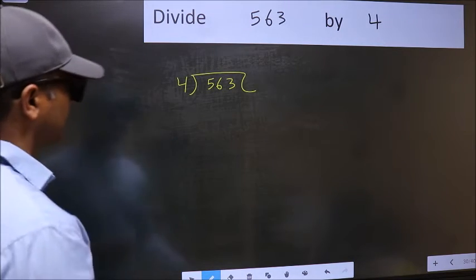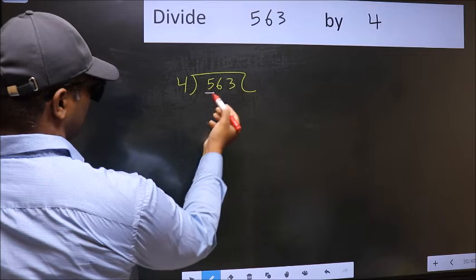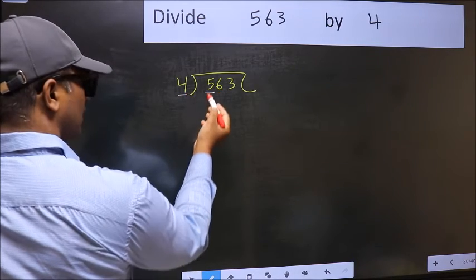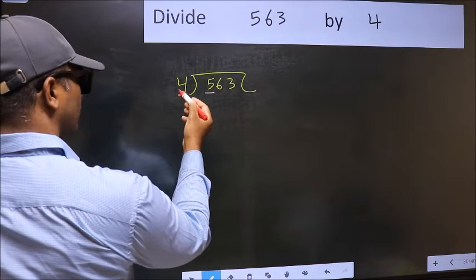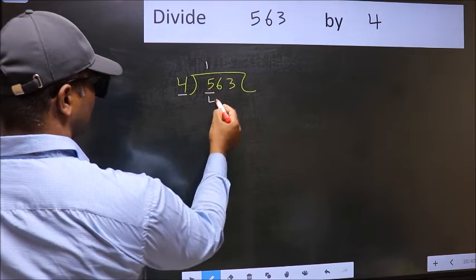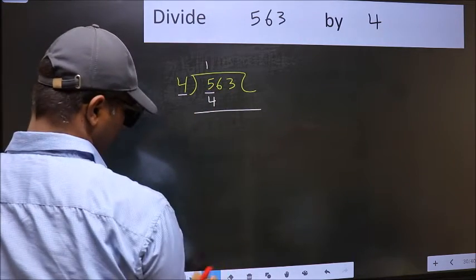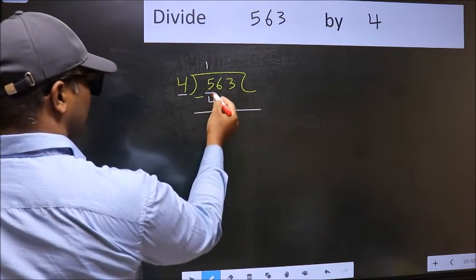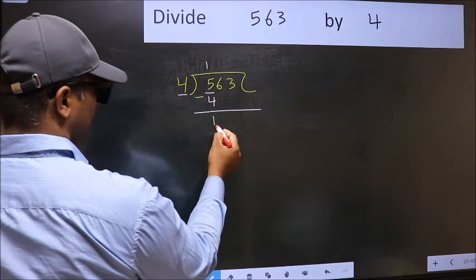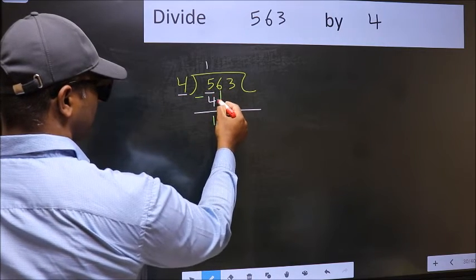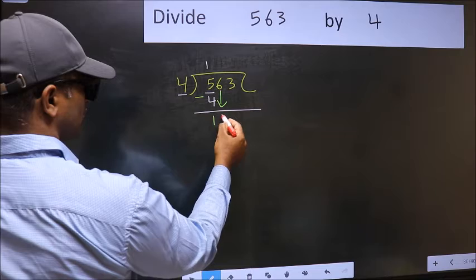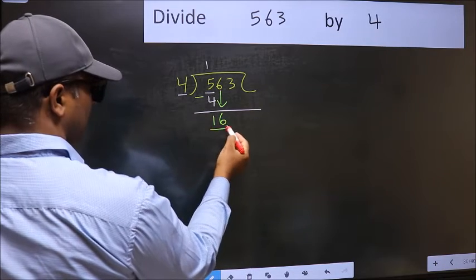Next, here we have 5 and here 4. A number close to 5 in 4 table is 4 once 4. Now you should subtract. 5 minus 4, 1. After this, bring down the beside number. So 6 down.